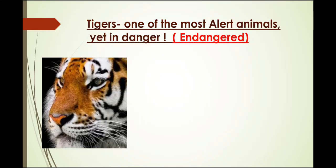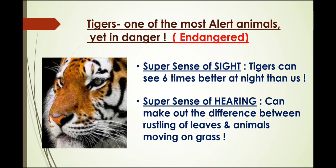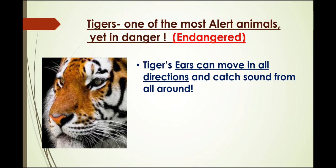Now we have already discussed about tigers. They have more than one super sense, yet they are in danger. First let us list all the super senses which tigers have. First is super sense of sight — tigers can see six times better at night than us, very far away, even when it is very dark. They also have a super sense of hearing. They can make out the difference between rustling of leaves and animals moving on grass, and can move their ears in all directions to catch sound from different directions.